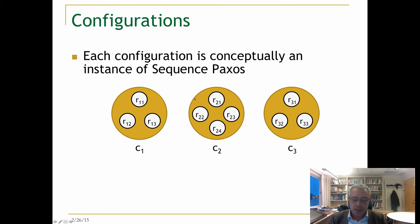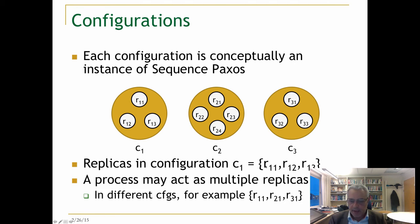Replicas are in essence roles, so it might be possible that r11 and r21 and r31 are actually the same process, the same process that is running these three replicas. So replicas in configuration c1, as I said, are r11, r12, and r13, and a process may act as multiple replicas in different configurations.